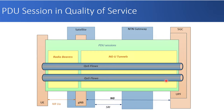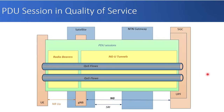If you draw the PDU session, the radio bearer is between user equipment and the satellite where gNodeB is implemented. From this satellite to the NTN gateway and to the 5G core — specifically the UPF, user plane function of 5G core — you have an NGU tunnel. So you have a radio bearer on one side and an NGU tunnel on the other, and on this PDU session you will have quality of service flows. Actual user traffic will flow onto different QoS flows required for different quality of service. The architecture of PDU session remains the same as in a normal new radio scenario — there is no change.